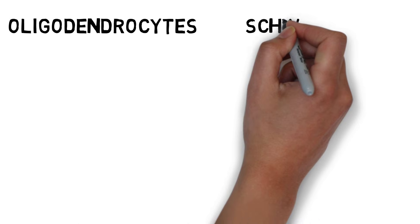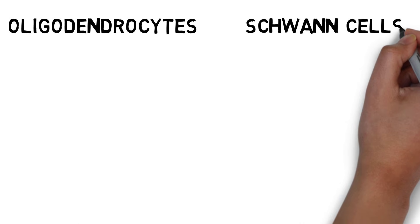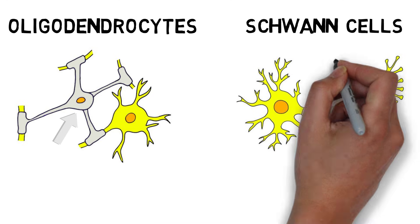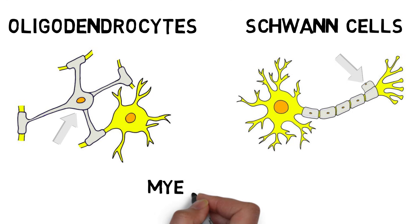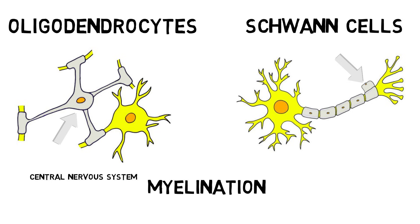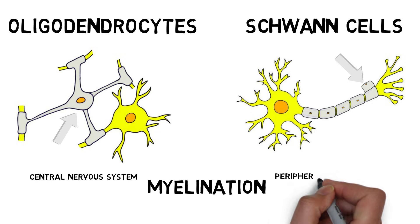Oligodendrocytes and Schwann cells are both responsible for covering neurons with an insulatory material called myelin. Oligodendrocytes myelinate neurons in the central nervous system, and Schwann cells myelinate neurons in the peripheral nervous system.